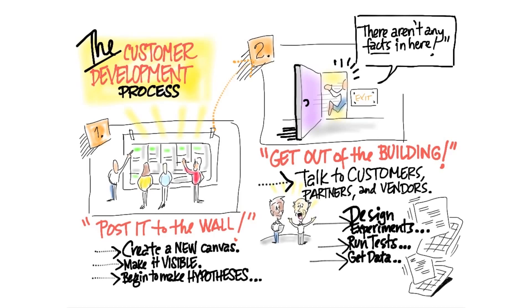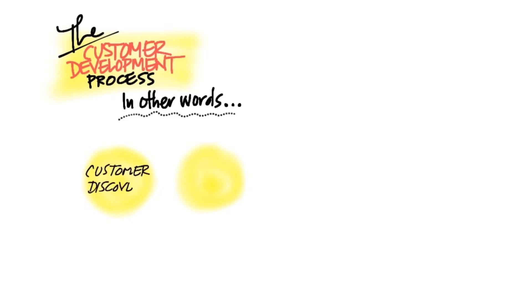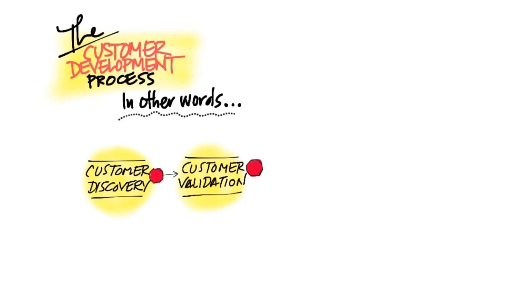The customer development process is actually a four-step process. The first step is customer discovery — this is where you construct your hypotheses and get out of the building to start testing your assumptions about whether other people have the same problem or need you think they have. Then you do customer validation to see if your proposed solution actually matches the customer problem. This test between problem, solution, features, and customers is sometimes called product-market fit. That's what you're out testing, and this is what we call the search for the business model.